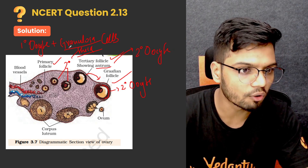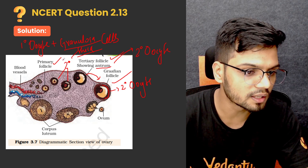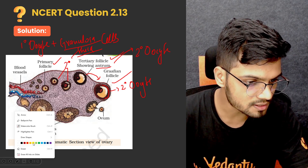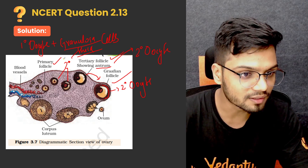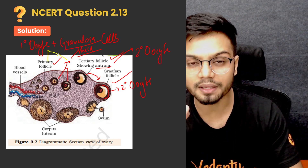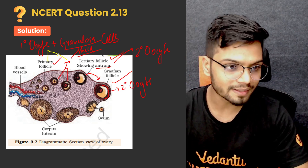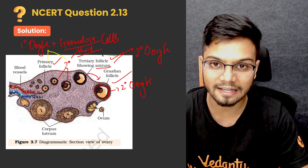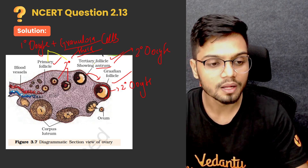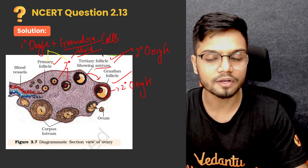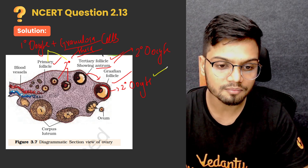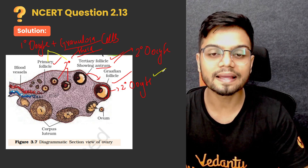But in the case of primary follicle and secondary follicle, we have primary oocyte. This is a very important point with respect to your boards and also with respect to your NEET. So remember: in the case of your primary follicle as well as secondary follicle, inside that we will have primary oocyte, but in the case of tertiary follicle and Graafian follicle, we have secondary oocyte.